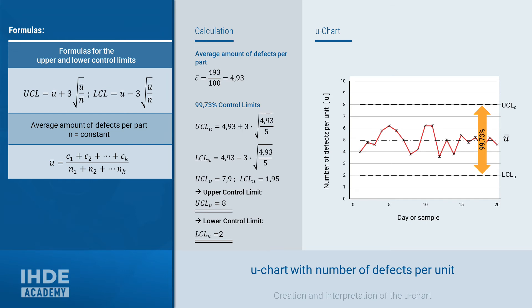The center line is u bar at 4.93 and the upper control limit, UCL, at 8. The lower limit is 2. The values in the graph are the number of defects from our example.